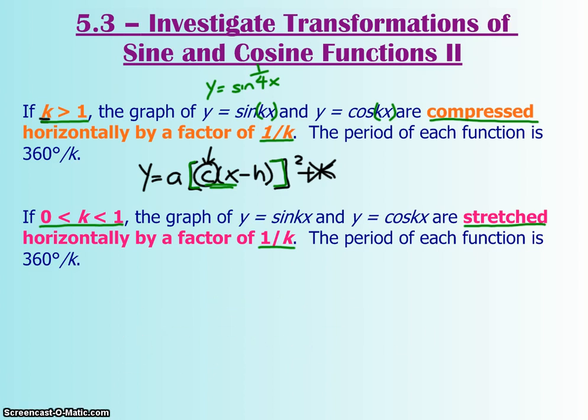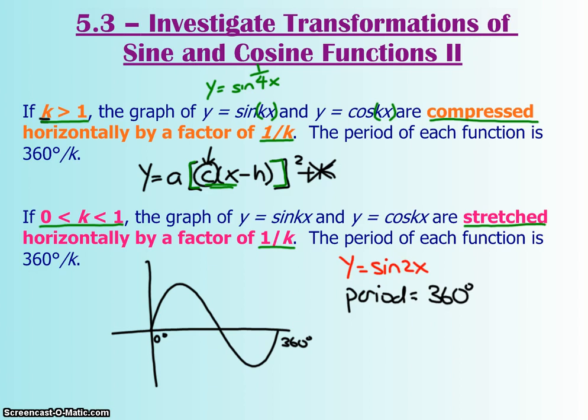I also want to explain where it says the period of each function is 360 over k. Imagine your sine graph starts at 0 degrees and goes to 360. So the normal equation has a period of 360 degrees. But then if you're going to add a k value, let's just give you something like this, that 2 is going to affect your period. So the period is going to be divided by your k, which is 360 degrees, split in half, and that's going to be 180 degrees.